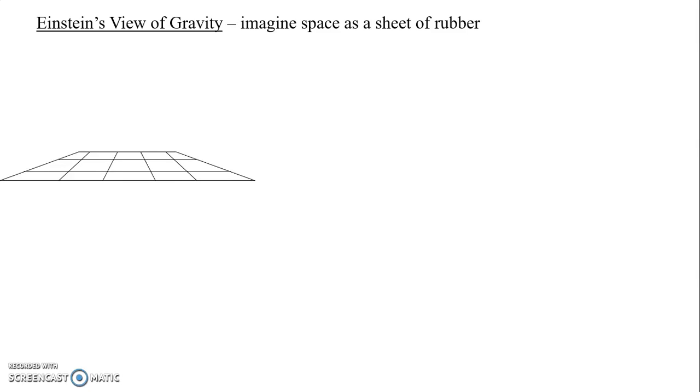So here's the surface of a trampoline, we're looking at it in perspective. The bottom edge is closest, the back edge is the far edge. It's a square trampoline, and I put some grid lines on it so we can visualize what's happening.